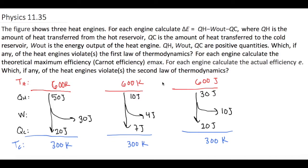QH, work out, and QC are all positive quantities. Determine which, if any of the heat engines, violates the first law of thermodynamics. Then for each engine, calculate the theoretical maximum efficiency Emax, and for each engine calculate the actual efficiency e, and then which, if any, violates the second law of thermodynamics.